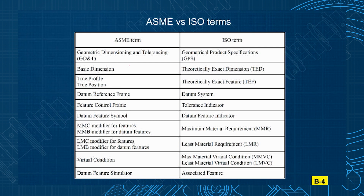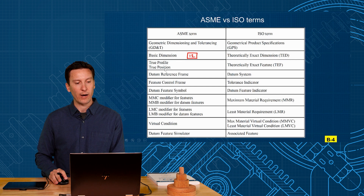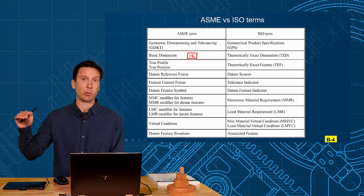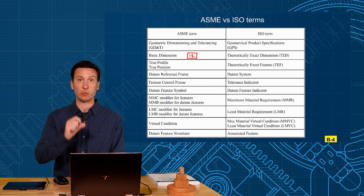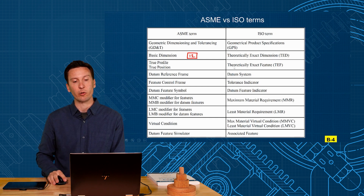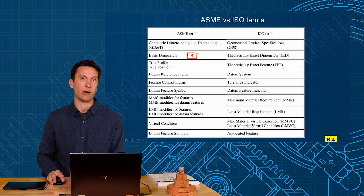Basic Dimension — those are the boxed-up dimensions, like 12 millimeters, theoretically exact. ISO actually calls that a Theoretically Exact Dimension, or TED for short. True Profile and True Position — that's the theoretical place a surface or hole is supposed to be, where your tolerance zone is centered around. ISO calls both of those things the Theoretically Exact Feature, or TEF.